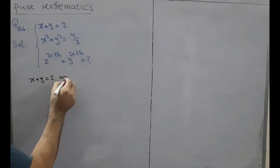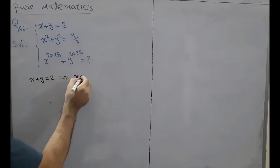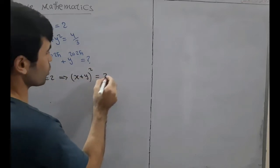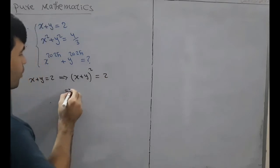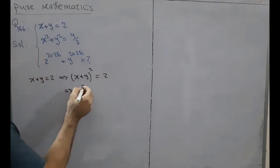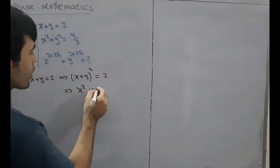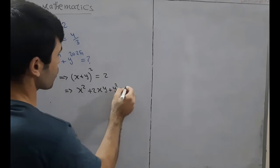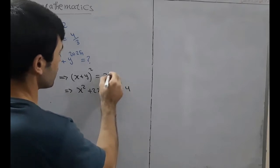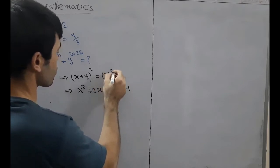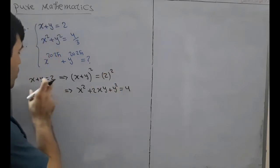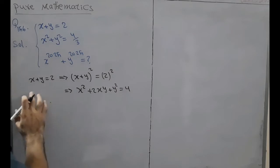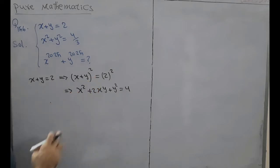This implies x plus y whole to the power 2 is equal to 4, which expands to x squared plus 2xy plus y squared is equal to 4, by squaring both sides.